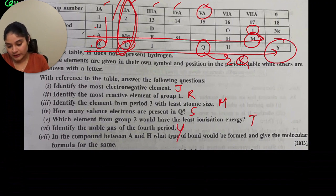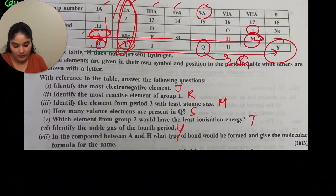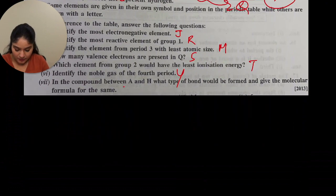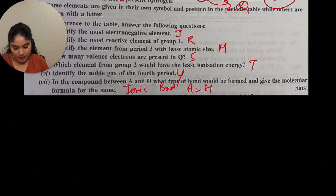In the compound between A and H, what type of bond will be formed and give the molecular formula? Looking at A and H on the table: H can accept 2 electrons and A can give away 1 electron — so an ionic bond is formed. Since A can donate 1 electron but H can accept 2 electrons, you will need 2 atoms of A. So the formula would be A₂H.